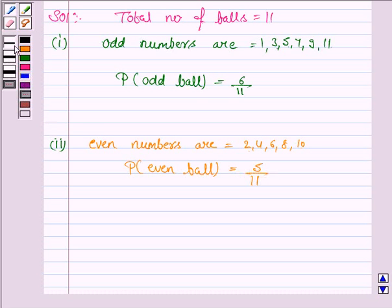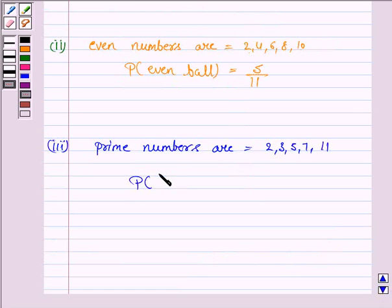Similarly, how many prime numbers are there between 1 to 11? These are 2, 3, 5, 7, and 11 and these are 5 in numbers. So the probability of a ball having prime number is 5 by 11.